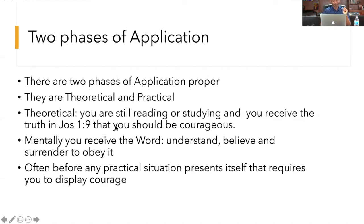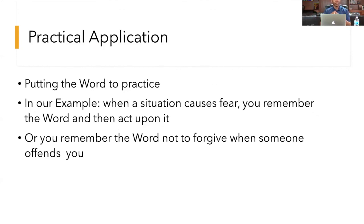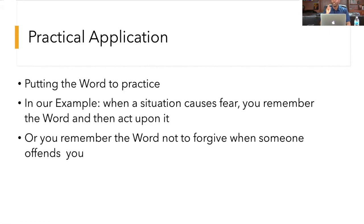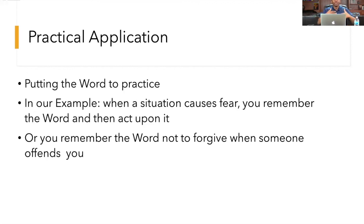Now let me close with the last step: correlation. Correlation is the shortest step. It has to do with putting the truth you've learned together. Joshua 1:9 is just one verse out of the entire Bible — you have to put that verse together with what you've learned in the entire book, the entire Old Testament, and the entire New Testament, to get a holistic perspective of what God has said. This is called a biblical theology — a holistic theology, a Christian philosophy of life. Maintain the discipline of going observation, interpretation, evaluation, application, and then correlation.